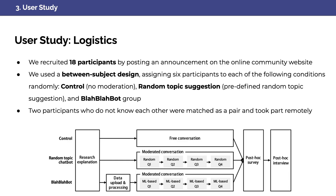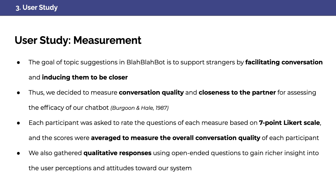To evaluate BlaBlaBot, we designed a between-subject experiment consisting of three control, three random topic suggestion, and three BlaBlaBot groups, where two participants are matched to participate in each group. Following the work of Bergen and Hale, we let users rate conversation quality and closeness to the partner based on a seven-point Likert scale, along with a post-talk interview for identifying possible reasons for such quality.